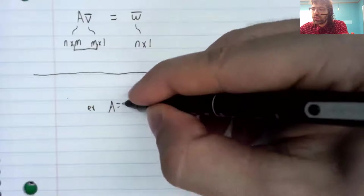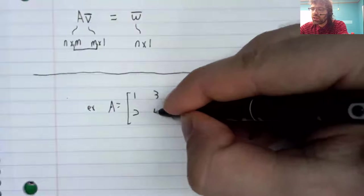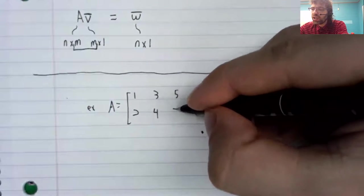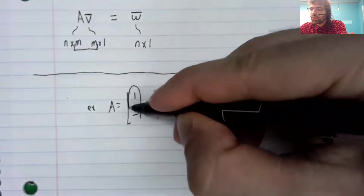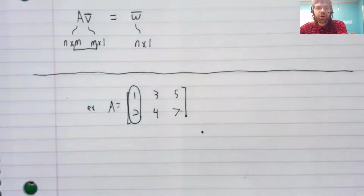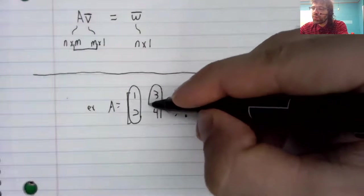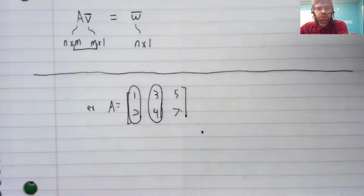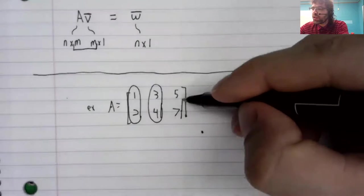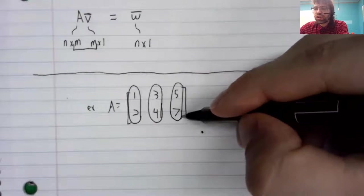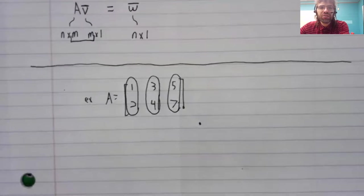Let's think of this matrix as being a bunch of column vectors sitting next to each other. So what I mean by that, say we have a matrix. This first column is a vector one, two. This second column is a vector three, four. This third column is a vector five, seven.